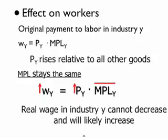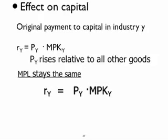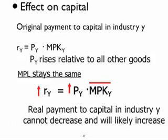If workers only bought Y, they would be indifferent. If they bought any other good in the economy, the price rise in Y and the increase in the wage will increase their ability to purchase goods. Now looking at the capital market: the price rise in Y also raises the payments to capital. The marginal productivity of capital remains the same because capital and labor are fixed, so R increases by the same percentage as the price of Y. Capital owners can buy just as much Y and more of other goods — their real income cannot fall.